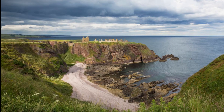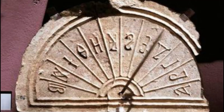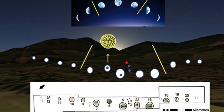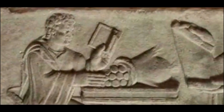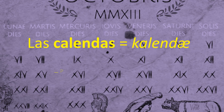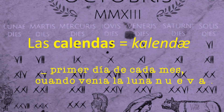El calendario más antiguo del que se tiene conocimiento está en Aberdeenshire, Escocia, y data del 8.000 a.C. Se trata de un monumento monolítico compuesto por 12 piedras que marcan la posición de la luna a lo largo de un año. La calenda, en el antiguo registro romano, eran el primer día de cada mes. La palabra calendario en español procede de esta palabra.